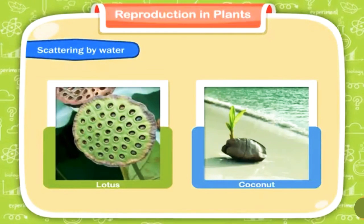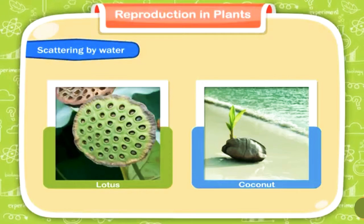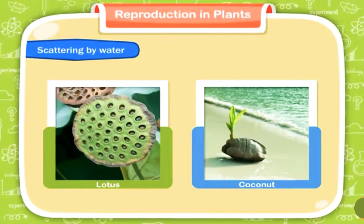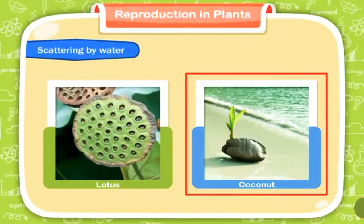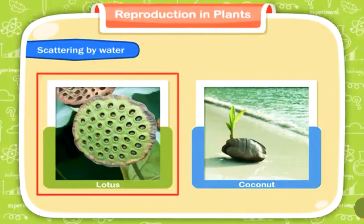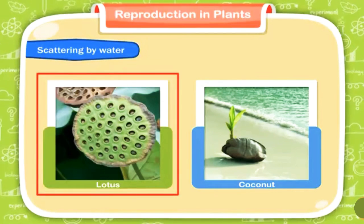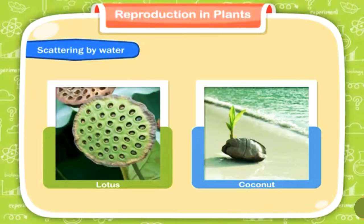Scattering by water. Some plants like lotus and coconut grow in or near water. The fruits and seeds of these plants are easily dispersed by flowing water. The coconut has a thick coverage of fiber and the lotus plant has a spongy part that helps them to float, so the seeds reach far away from their parent plants.